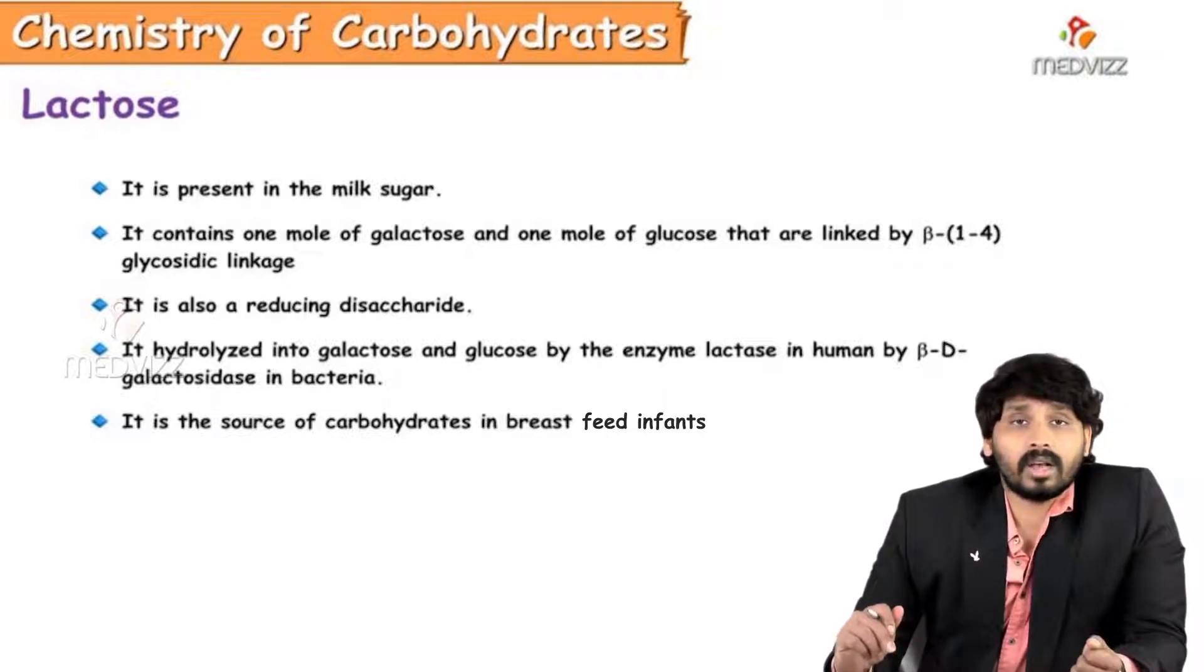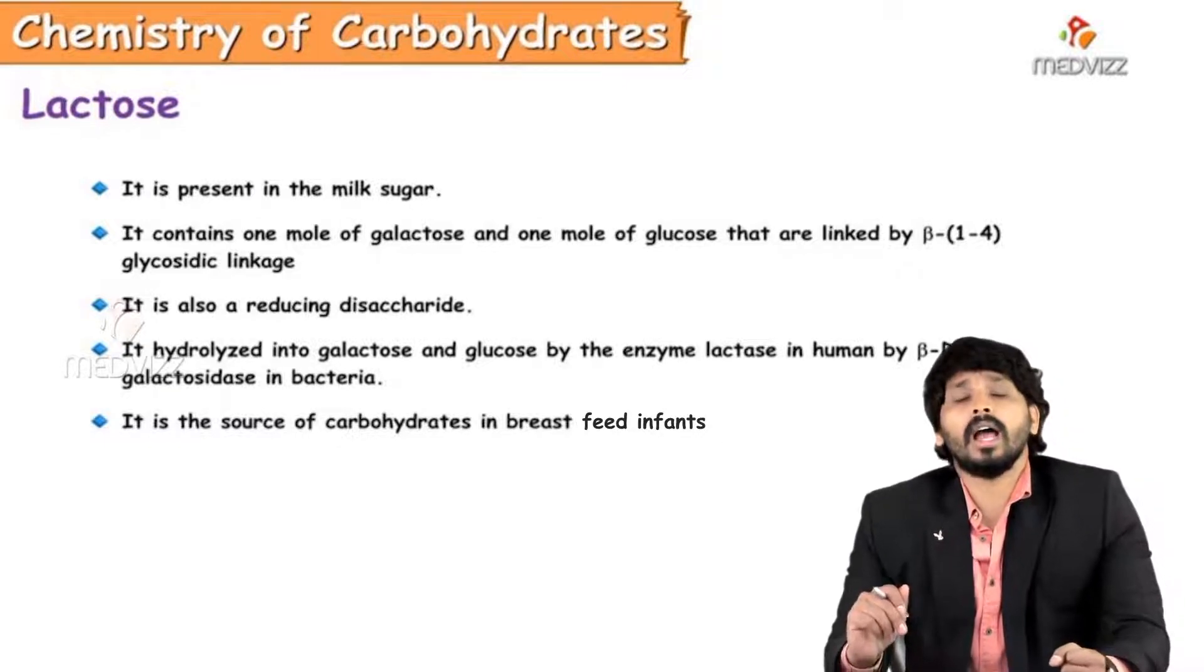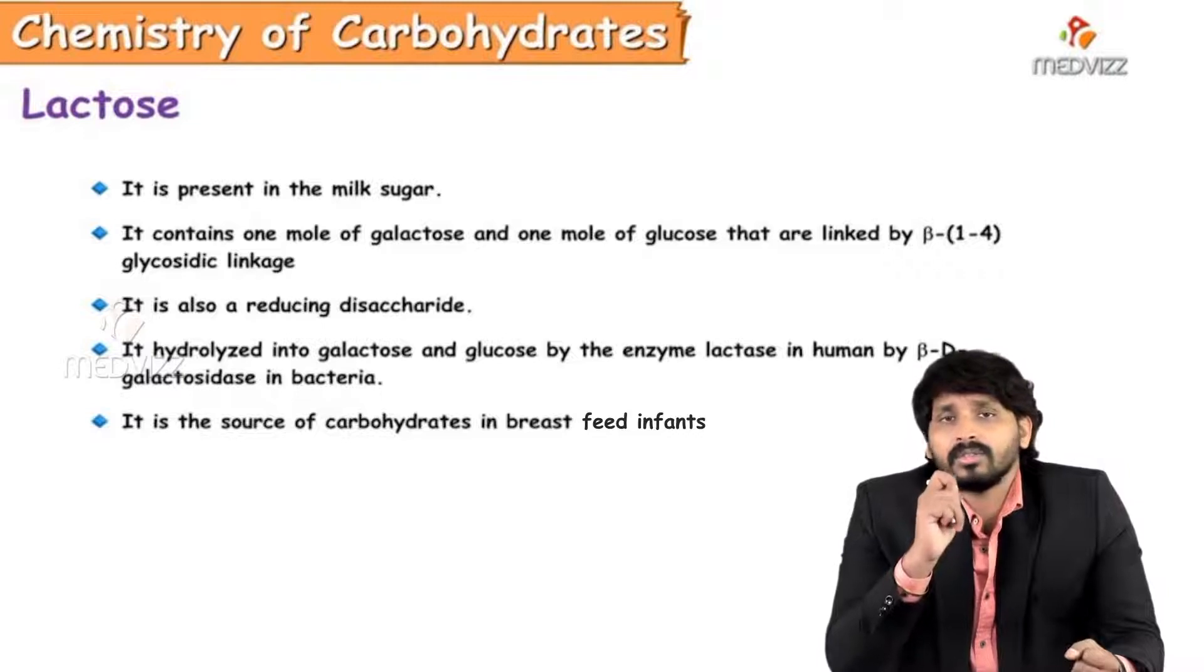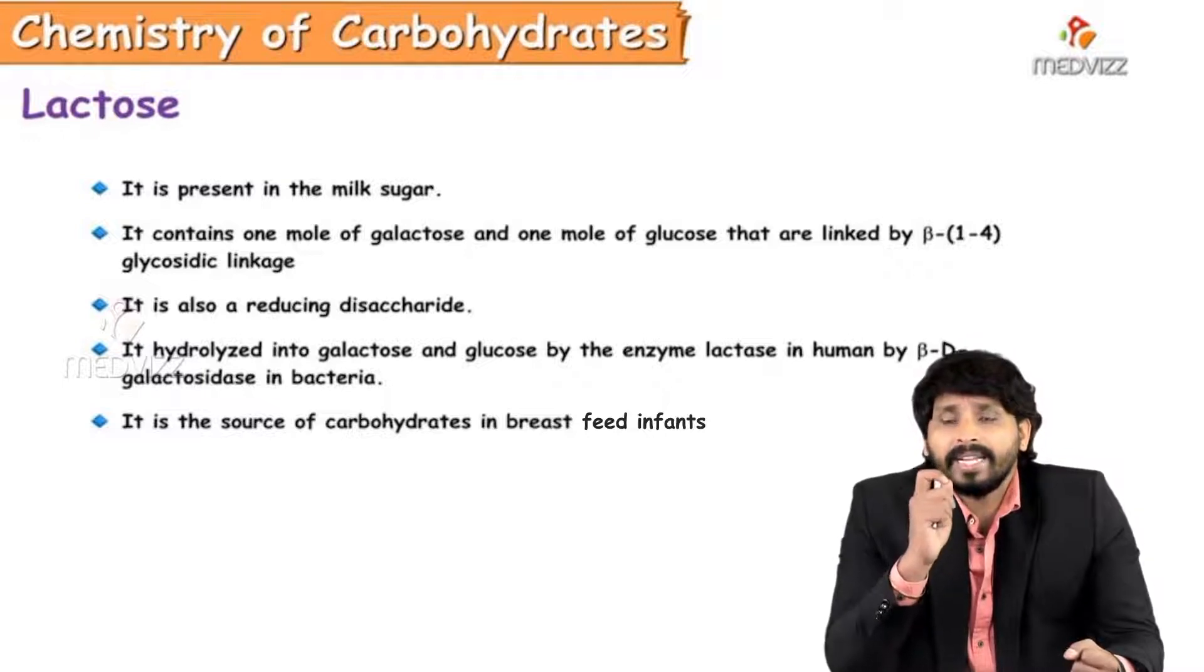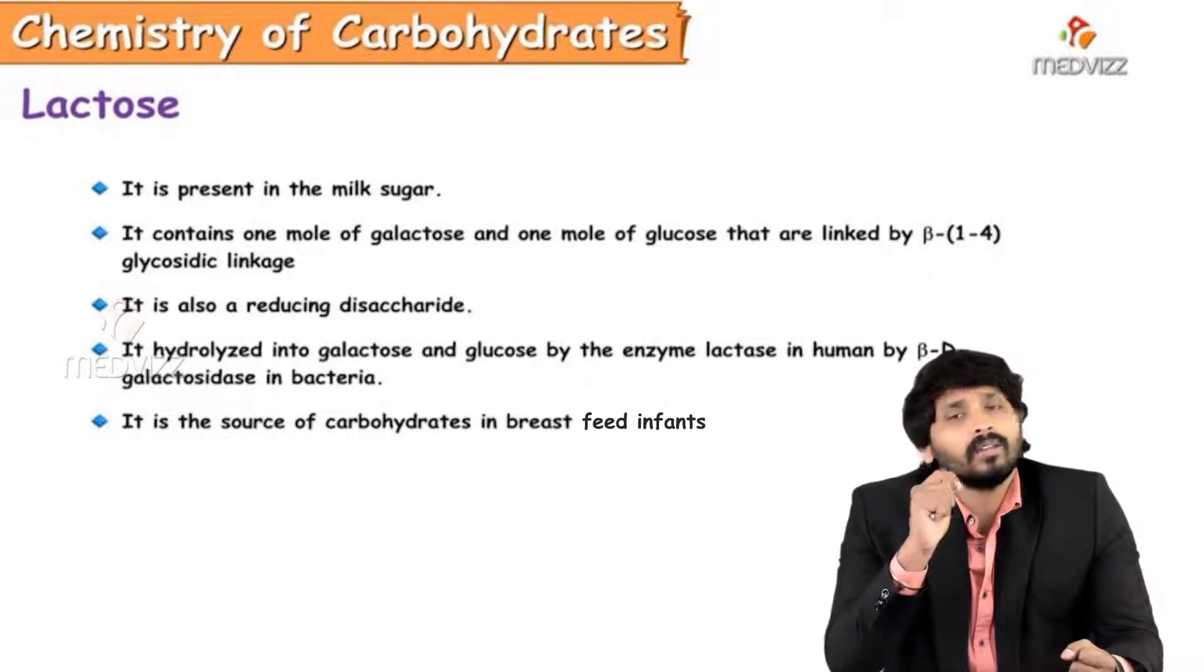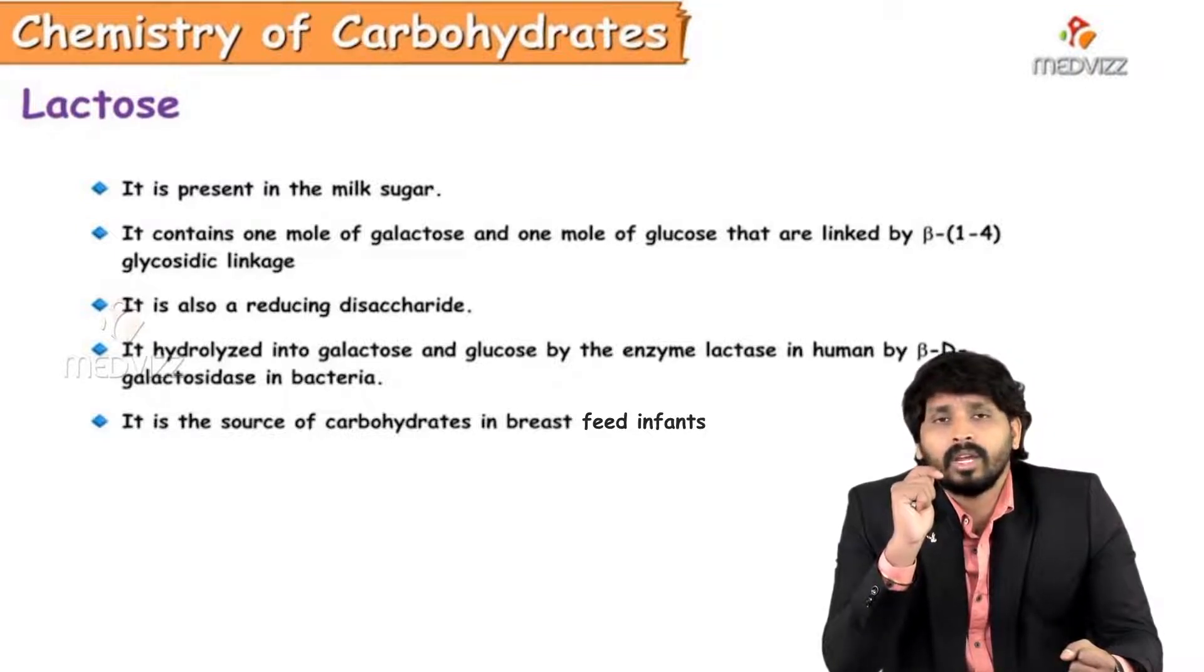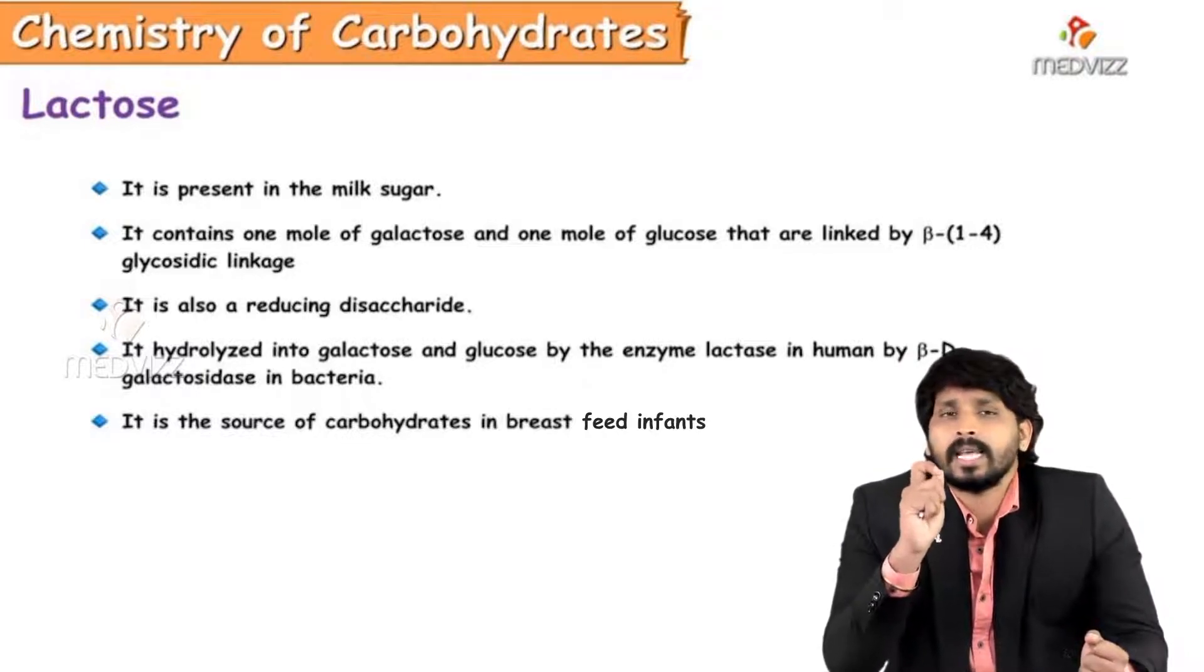Coming to lactose, lactose otherwise known as milk sugar because lactose present in milk. It is made up of two monosaccharide units, one is galactose, the other one is glucose. And here the confirmation of galactose is beta form, so that's why beta galactose and alpha glucose. And the linkage is beta 1,4 glycosidic linkage. As the second monosaccharide is glucose, which free aldehyde group at the first carbon of the glucose is free, which gives reducing properties to this lactose.